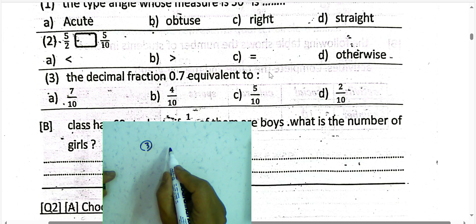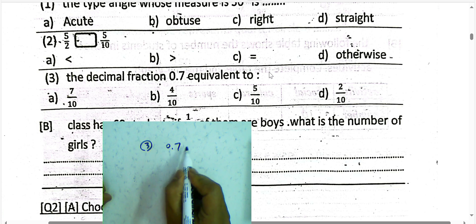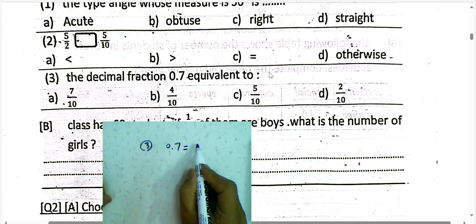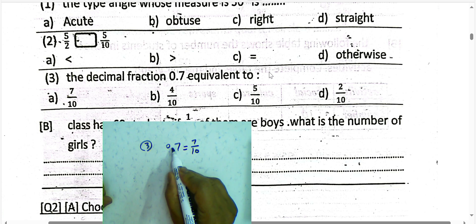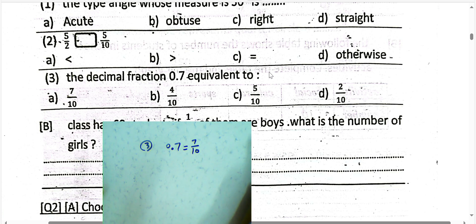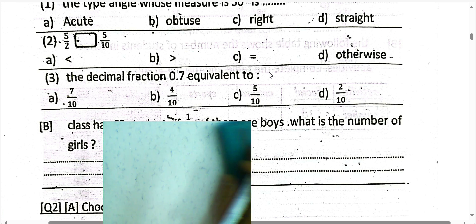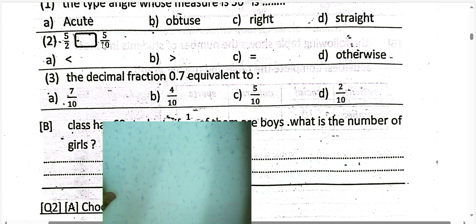Question number 3: the decimal fraction 0.7 is equivalent to 7 over 10. We count one decimal place, so choose letter A.